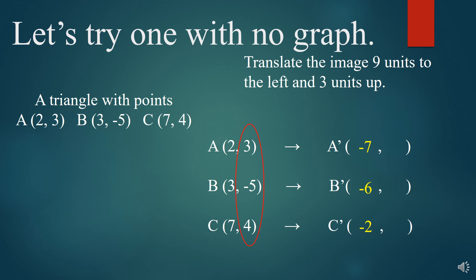Now we look at the Y's, and we're going to be going 3 units up, and so we're going to be adding 3 to each of those. So 3 plus 3 is 6, negative 5 plus 3 is negative 2, and 4 plus 3 is 7. All right, and those are your points, and that's how you do it without a graph.